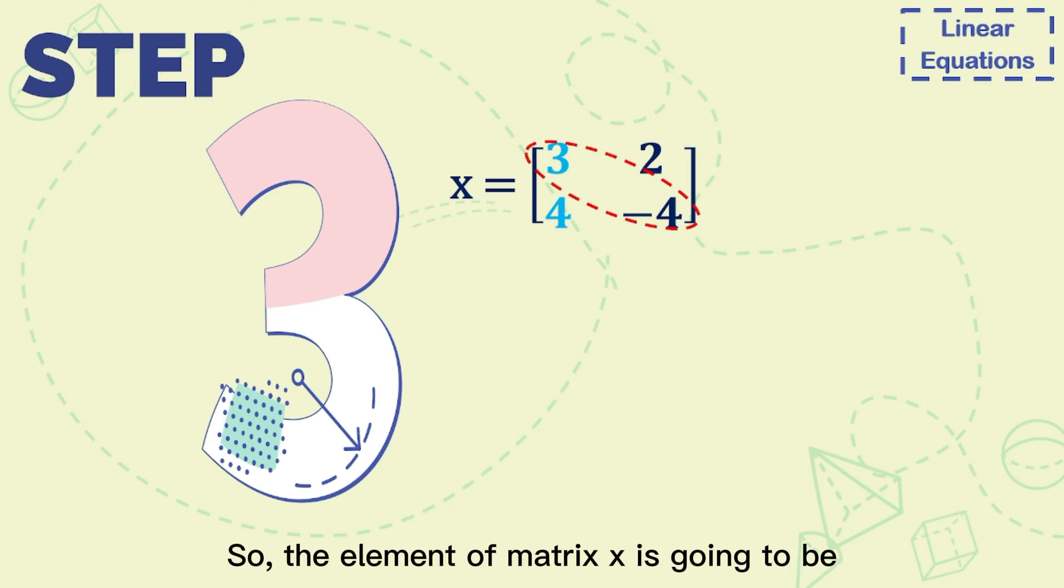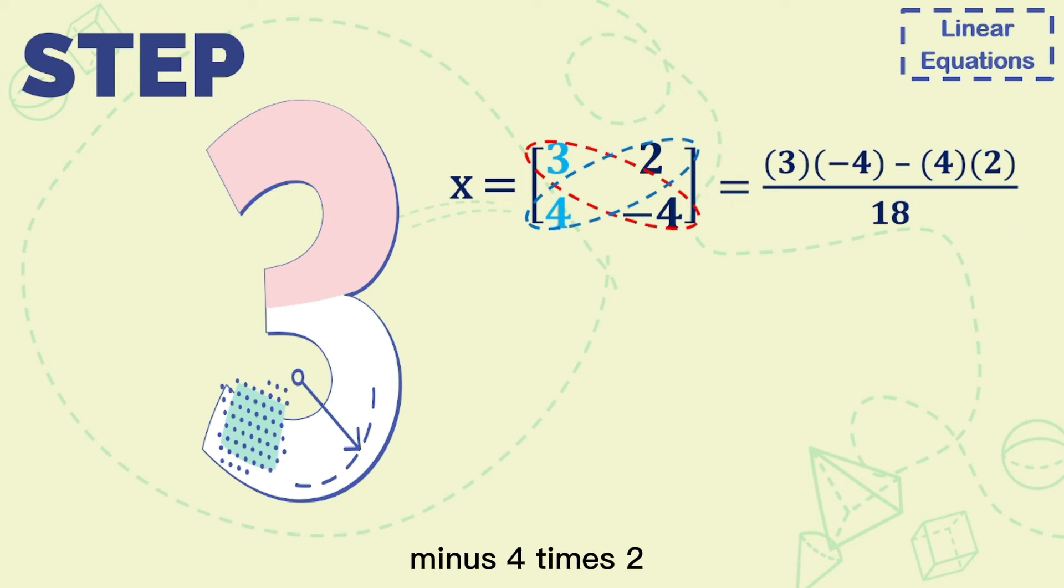So the element of matrix x is going to be c1, b2, c2, and b1. Therefore, it's going to be 3 times -4 minus 4 times 2, divided by 18. So the answer is -20 over 18, and simplified to -10 over 9.